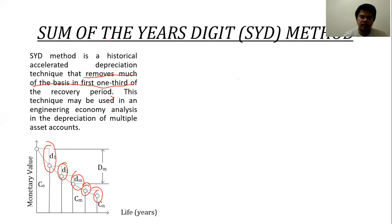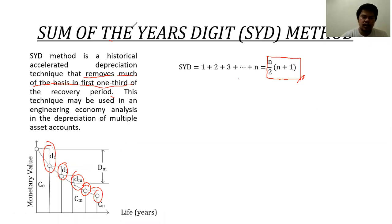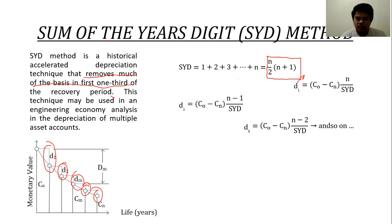First, we calculate SYD, which is equal to n over 2, multiplied by n plus 1, where n is the economic life of the property or machine. After identifying SYD, we calculate the depreciation in the first year, then the second year, third year, and so on. The total depreciation accumulated over m years is the sum of the depreciation each year.